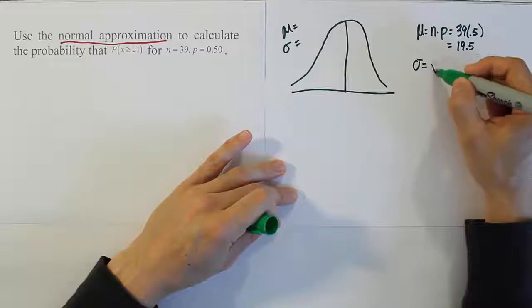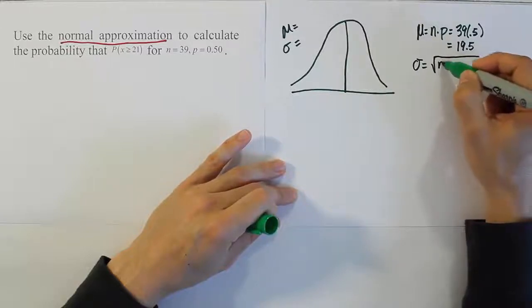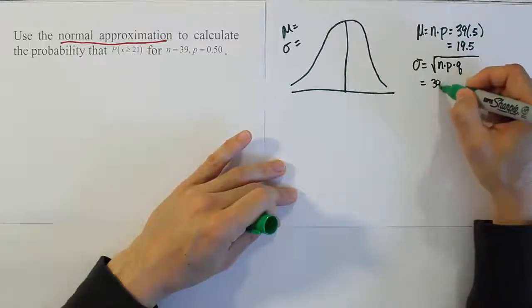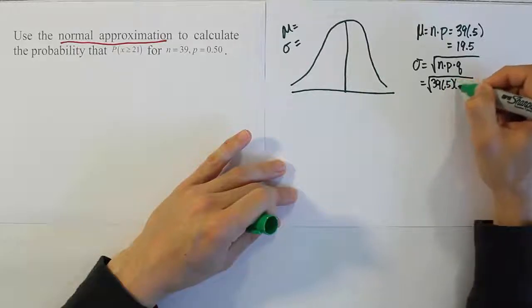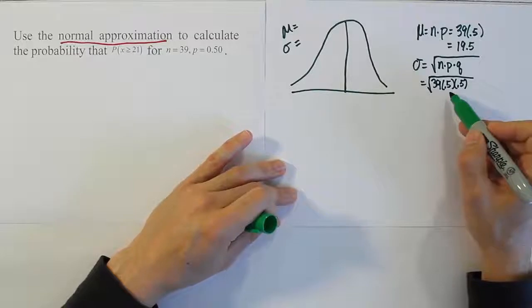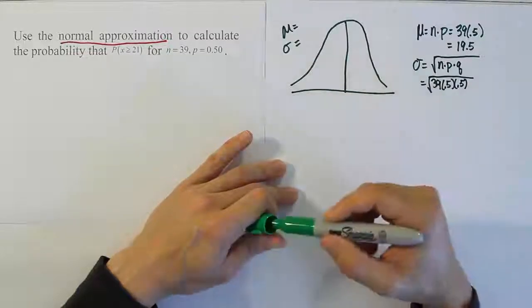Then we're going to do standard deviation as the square root of n times p times q. Well, for us, that's going to be 39 times 0.5 times 0.5. Remember, p and q must add up to 100%, so if p is 50%, q must be 50%.